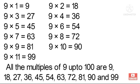So here you will write the answer: All the multiples of 9 up to 100 are 9, 18, 27, 36, 45, 54, 63, 72, 81, 90, and 99. These are all the multiples of 9 up to 100.